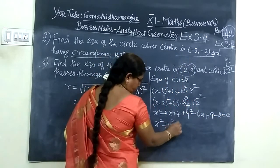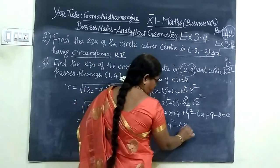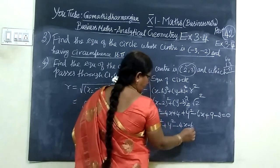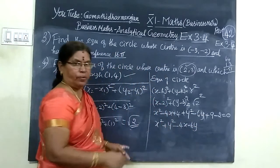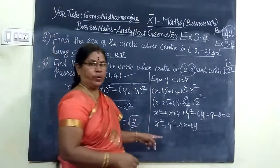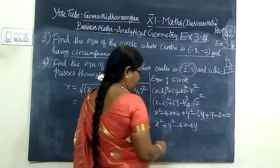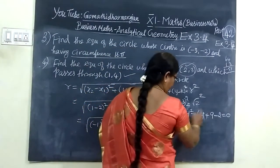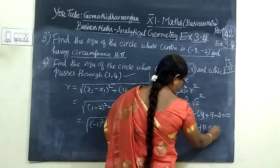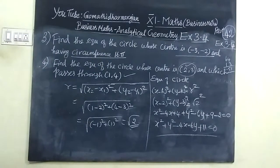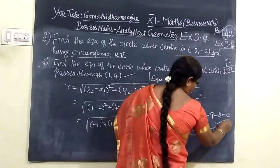x² + y² - 4x - 6y, combining constants: 4 plus 9 minus 2 equals 11. So x² + y² - 4x - 6y + 11 = 0. This is the correct answer.